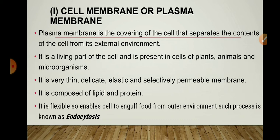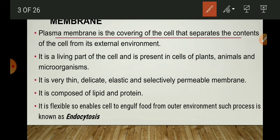Regenerative means if it gets damaged, then it can be regenerated. Microscopic means we cannot see it with our naked eyes, but we can observe it through an electron microscope. Selectively permeable means it allows some selective substances to come inside the cell and to go out of the cell. For example, if this is the cell with these organelles, this outer layer is the plasma membrane.